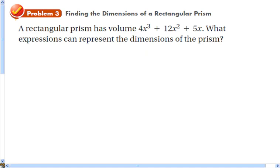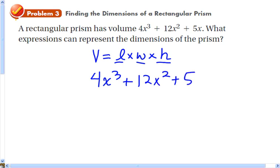We can use this idea to help us find the dimensions of a rectangular prism. The volume is equal to length times width times height. So there's really 3 dimensions. If we factor this polynomial, we'll see what expressions represent those 3 dimensions. First, look for a common factor we can factor out of all three terms. It looks like the greatest common factor is x. So let's rewrite this using x as part of the product, and then we get 4x² + 12x + 5.